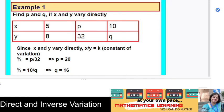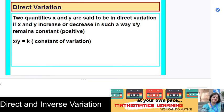To repeat: when x and y are two quantities said to be in direct variation, x and y increase or decrease such that x upon y remains constant. We say x upon y equals k, where k is the constant of variation.